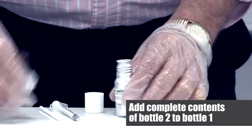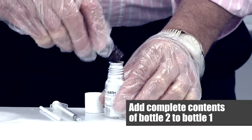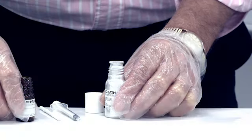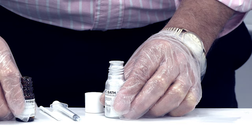Add the complete contents of the part two brown bottle to the part one aluminum bottle. If a smaller amount of product is required, mix exactly half the amount of each bottle.